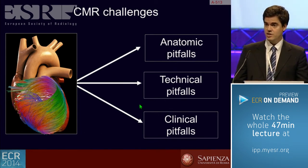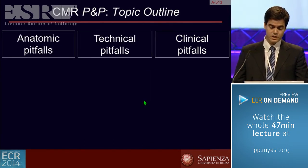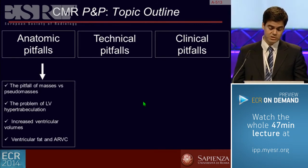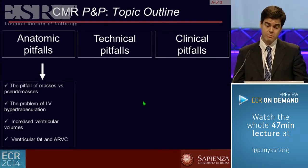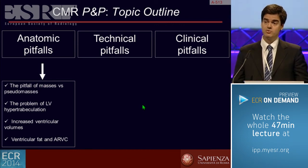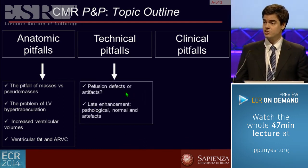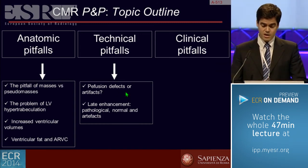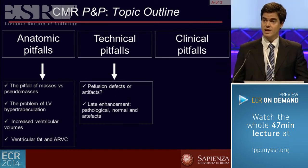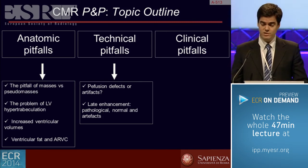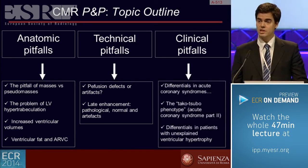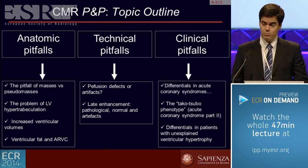This is the pathway and agenda I will discuss over the next 45 minutes. Anatomic pitfalls include: differentiation between masses versus pseudomasses, the problem of hypertrabeculation — a very common clinical problem — increased ventricular volumes, and the problem of fat. We will focus on differentiating real versus false perfusion defects. We will discuss late enhancement: when is it true, when is it false, and how do we approach it? And we will discuss clinical cases with related important pitfalls.